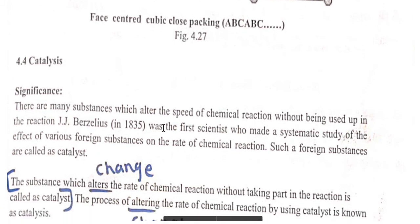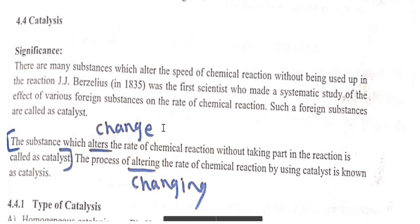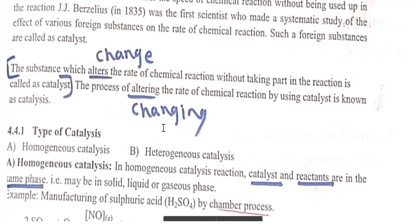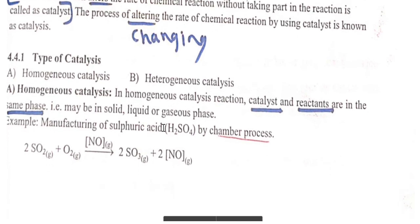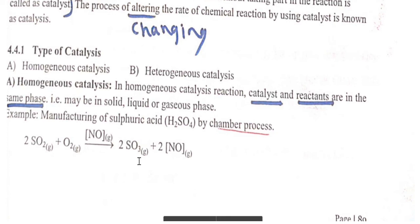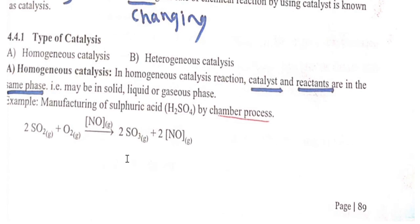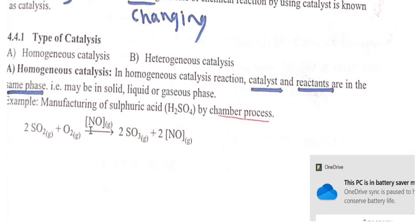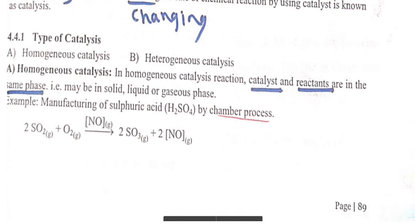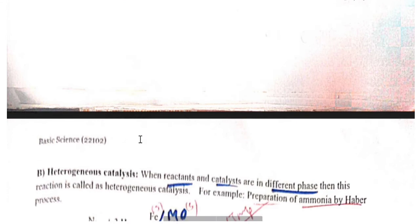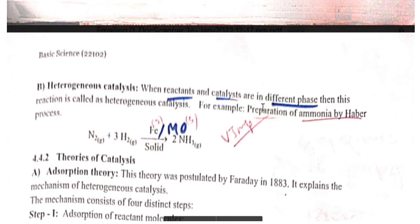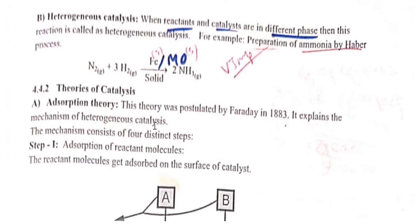Catalysis: a substance which alters, that means changes, the rate of reaction is known as a catalyst. There are two types: homogeneous and heterogeneous. In the lead chamber process used for manufacturing sulfuric acid, the catalyst is nitrogen oxide and the reactant; both are in the same gaseous phase — this is homogeneous catalysis. In heterogeneous catalysis, the reactant and catalyst are in different phases. For example, in the Haber process, the reactants are in gaseous phase and the catalyst is in solid phase.